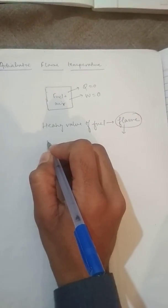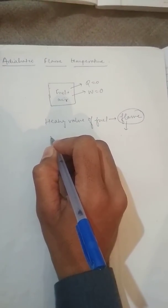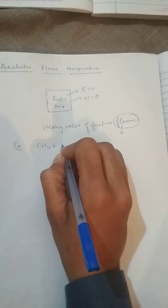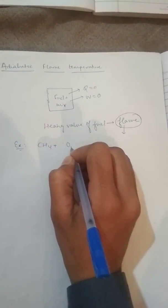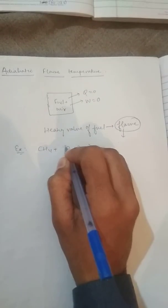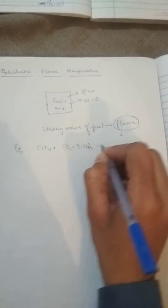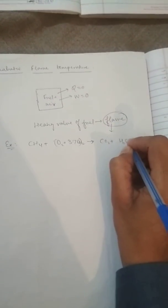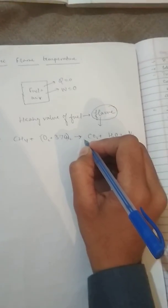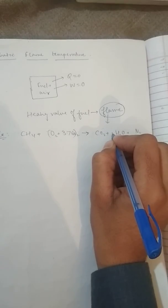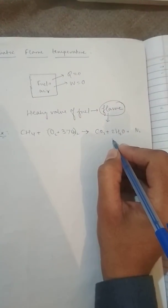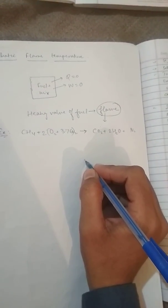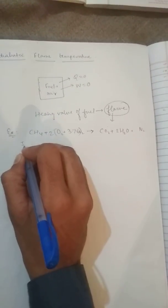This can be defined by the following chemical equations. For example, if methane is oxidized in air, we can form a balanced chemical equation. After writing the balanced equation, we apply the first law of thermodynamics.